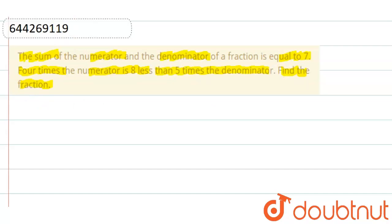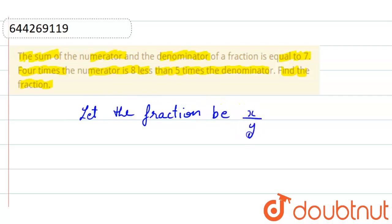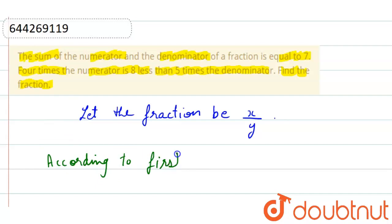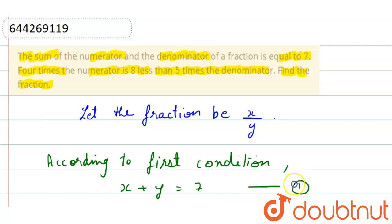So here, what we have to find is the fraction. So let the fraction be x by y. According to the first condition, the sum of the numerator and the denominator of a fraction is equal to 7, so we can write x plus y equals to 7. This is our first equation.